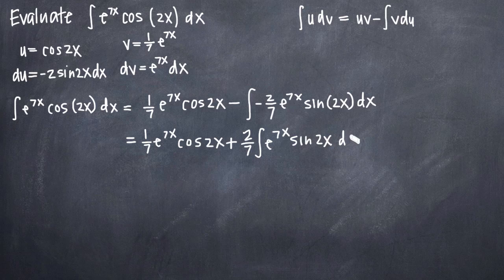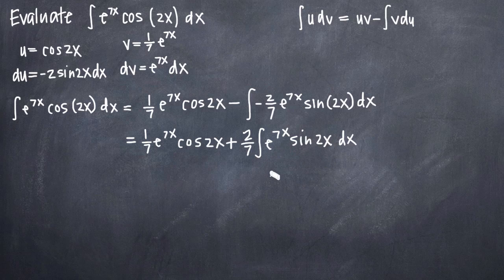Your first thought might be that we haven't made very much progress. But whenever you have an exponential times a trigonometric function and you're using integration by parts, what will often happen is you'll need to apply integration by parts twice. We're going to go ahead and apply it again, setting u equal to the trigonometric function and dv equal to the exponential function.